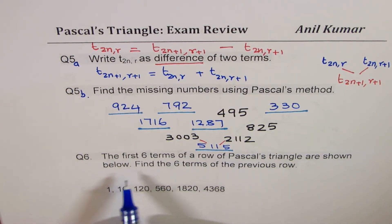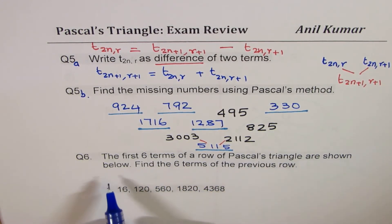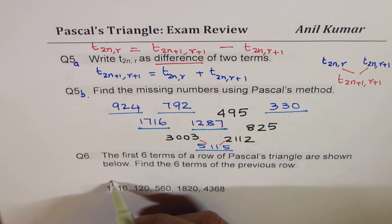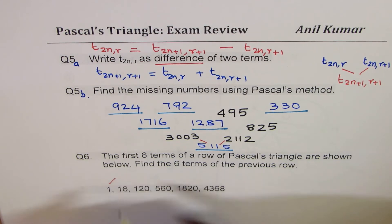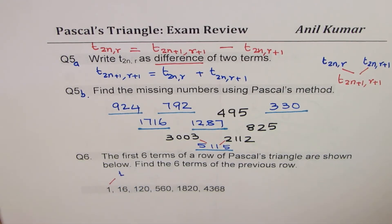Question number 6. The first 6 rows, first 6 terms of a row of Pascal's triangle are shown below. Find the 6 terms of the previous row. That means before. Now before this, you know, 1, so that means triangle number 1 will be definitely there. So, so we could begin with 1 itself. Now 1. Next will be what?